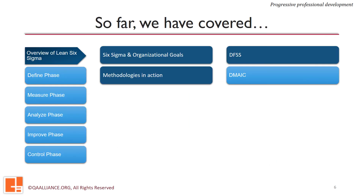By now we have understood the methodology of DFSS and the frameworks that are used to implement it. We must know that DFSS is a preventive measure, which prevents defects in the product or services. In the next lesson, we'll learn about the common methodology of process improvement — DMAIC — and we'll also see how DFSS and DMAIC align with each other and what differentiates them.